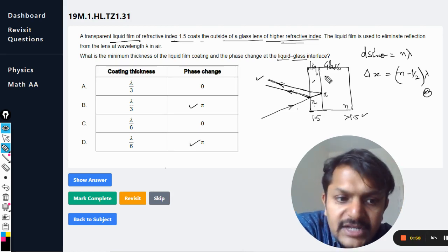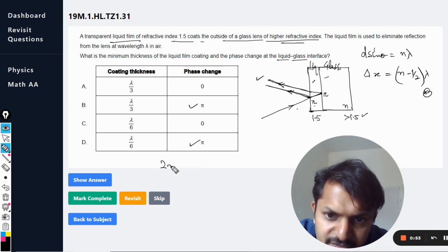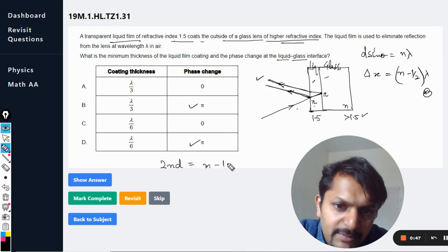And what about this thing? Now let us see the coating. So for this we know that 2nd should be equal to destructive interference, and that will be given by (m - 1/2) into lambda.